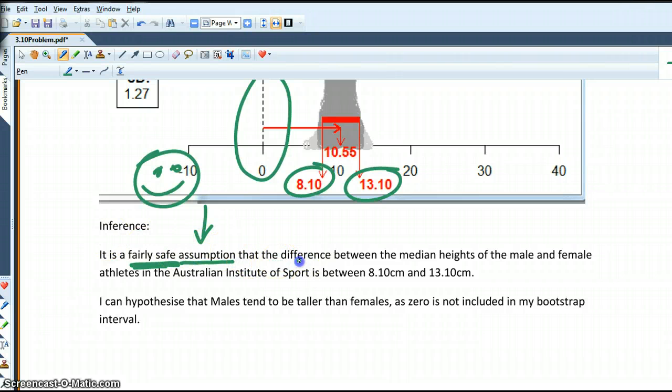It's a fairly safe assumption, so that's important to have. That the difference, so that word difference comes again, the same language as my problem. Between the median, so that's my statistic that I'm comparing. Sorry, yeah, the statistic, that's my variable, the heights, of male and female, my categorical split. Athletes in the Australian Institute of Sport, that is my population. So, why I'm pointing this out is that you need to tick these off when you've got the sentence. Don't just write a sentence at the end of it. You've got to tick them off.